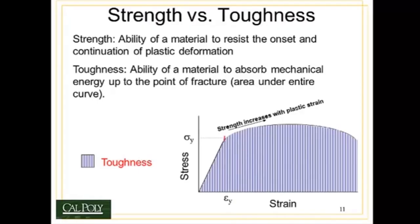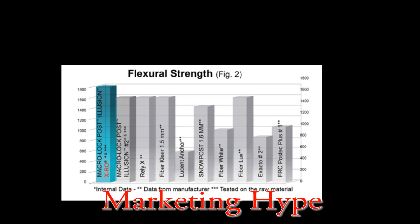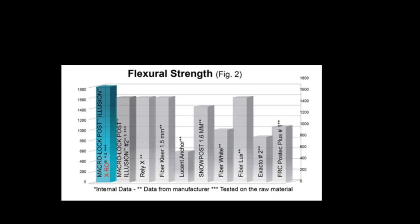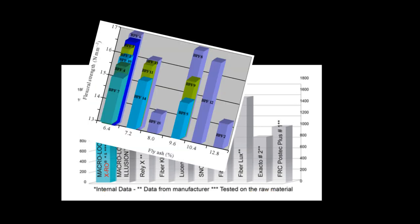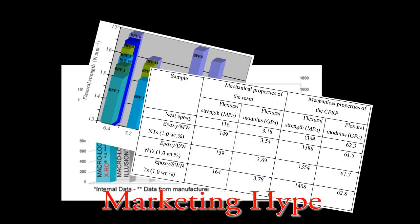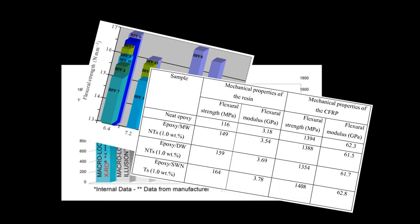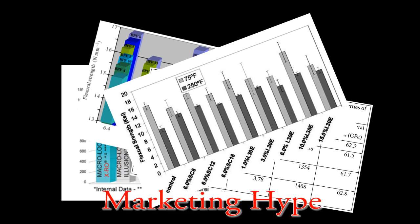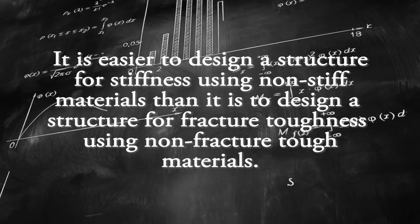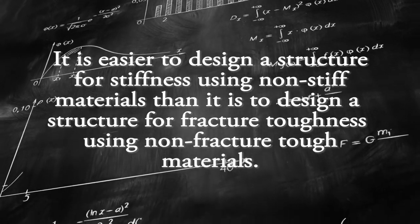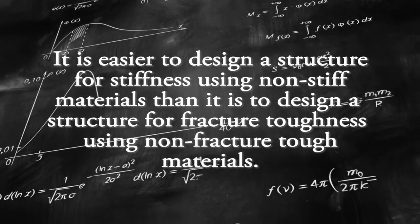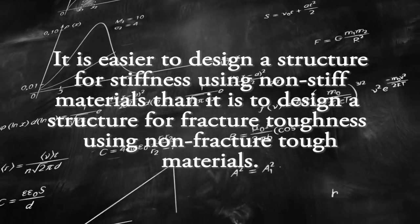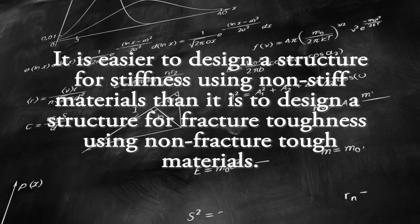Fracture toughness is the quality of a material to resist the rapid propagation of cracks. Marketers of glass fiber reinforcements sometimes try to use flexural strength and flexural modulus — measurements of stiffness — to suggest clinical performance. However, any structural engineer will tell you that it is easier to design a structure for stiffness using non-stiff materials than it is to design a structure for fracture toughness using non-fracture-tough materials.